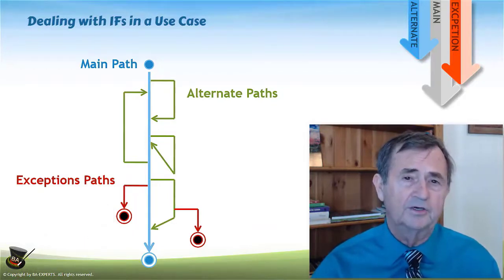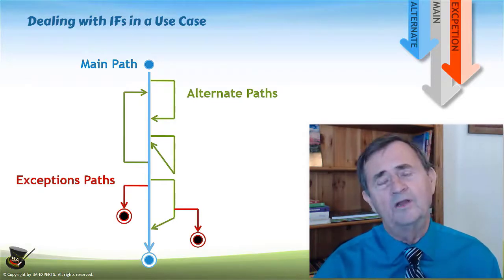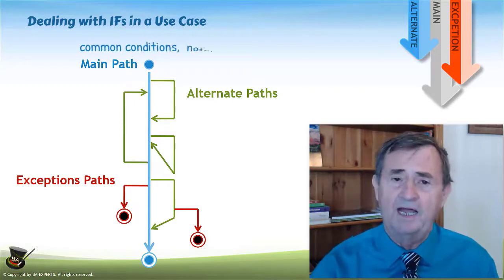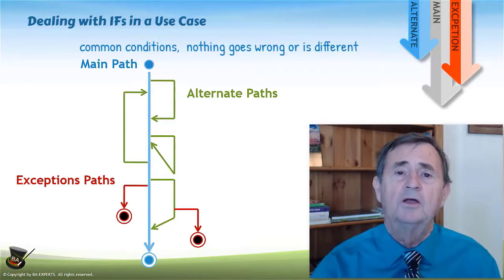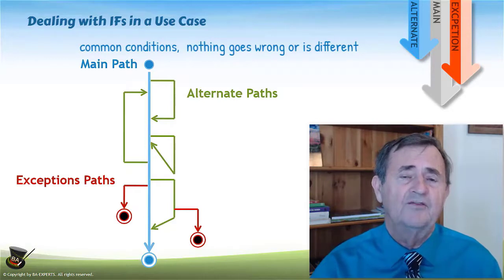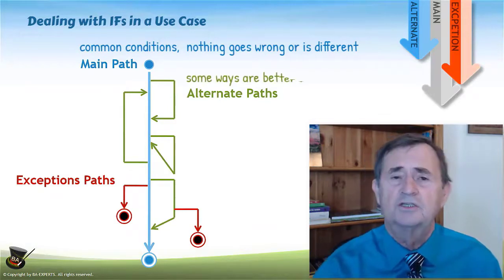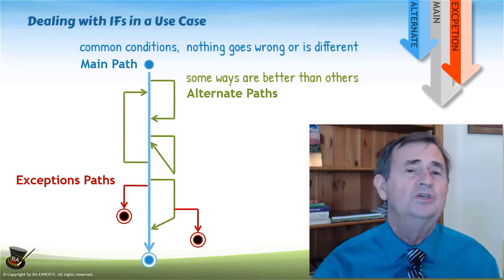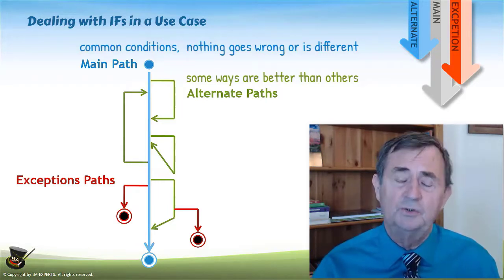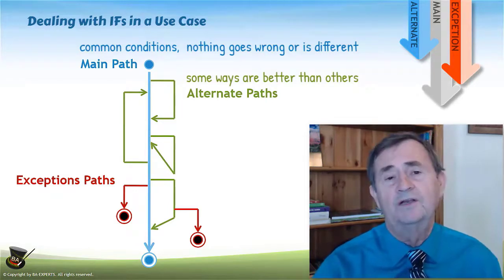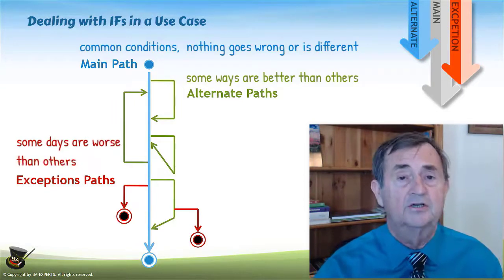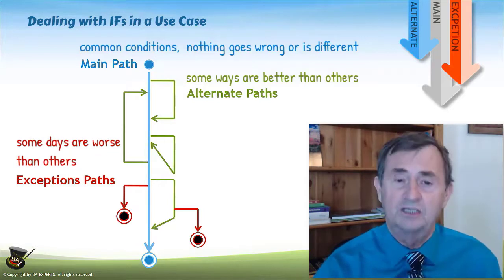When we're dealing with alternates and exceptions, how do we capture this information? Every one of them basically starts the use case with the standard path. If there is a condition that occurs — a situation you recognize — that causes the processing to deviate but ultimately return to deliver the value, you've identified an alternate path. If you identify a situation where you can't finish the use case under that condition, you've identified an exception path.